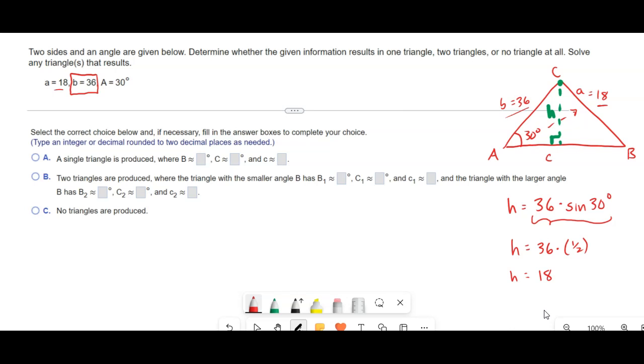So h is equal to A, which means we have one right triangle. The triangle that we're given here is actually a right triangle. This picture is not necessarily to scale; it would actually look like that.